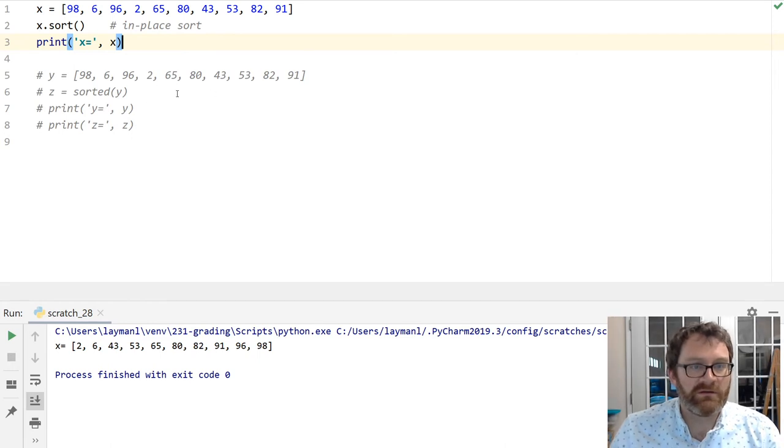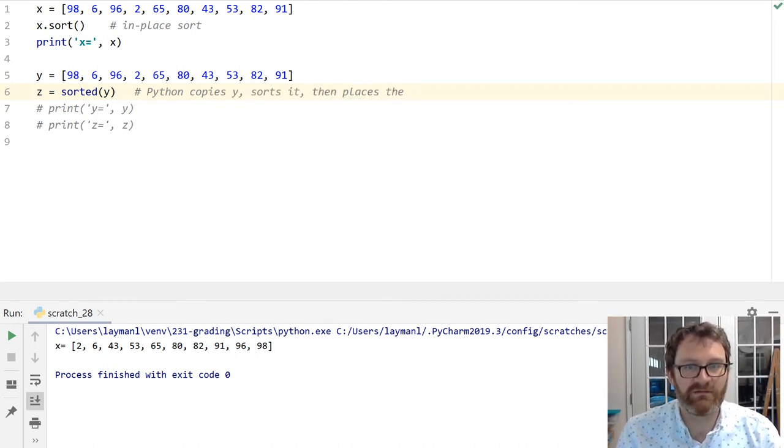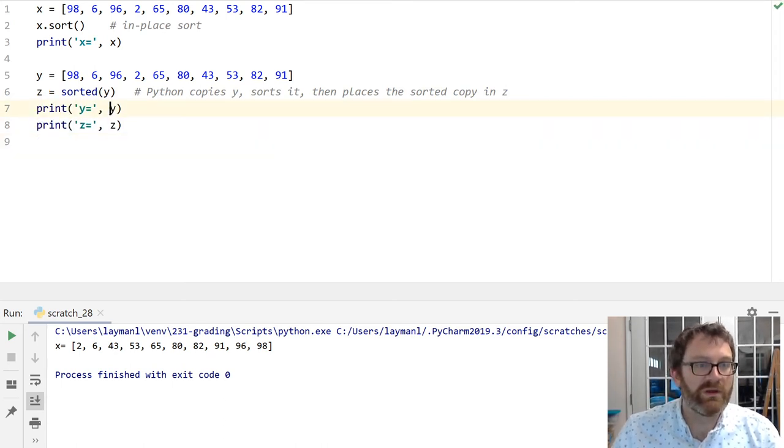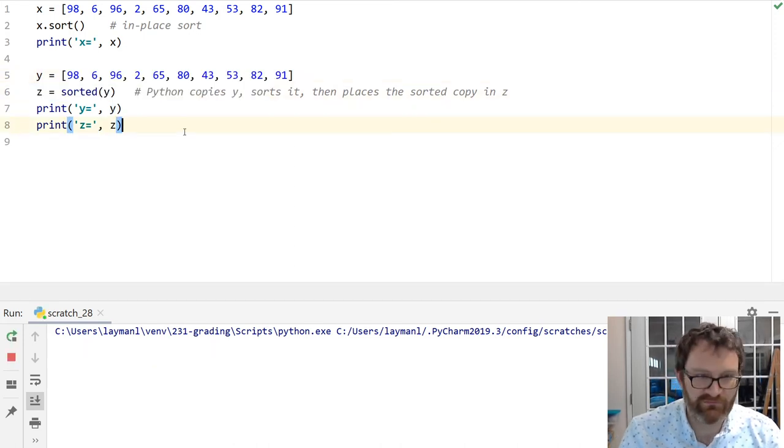So, the other option is this sorted function. I've got my same list here. I've put it in a y variable now. And I'm saying z gets sorted y. So this is not an in-place sort. What happens here, when you call the sorted function, is that Python copies y, sorts it, then places the sorted copy in z. So this is beneficial because y will retain its original order, whereas z will be sorted. Let's run this and see it.